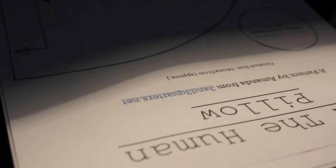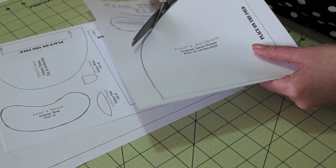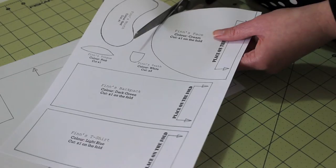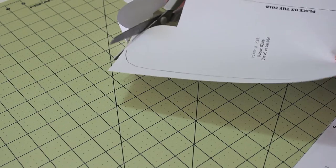To begin, print out the pattern and read the instructions. Then, with paper scissors, cut out each of the template pieces around the outer lines.